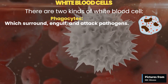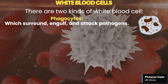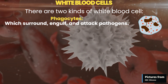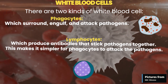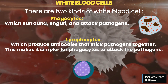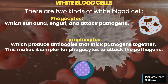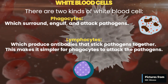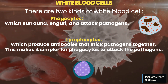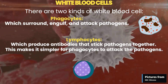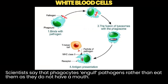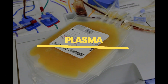Phagocytes, which surround, engulf, and attack pathogens. Lymphocytes, which produce antibodies that stick pathogens together — this makes it simpler for phagocytes to attack the pathogens. Scientists say that phagocytes engulf pathogens rather than eat them, as they do not have a mouth.